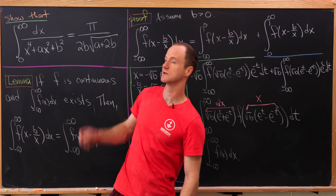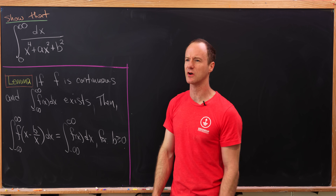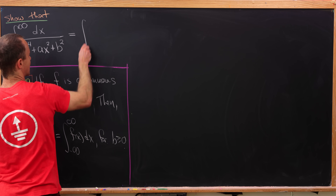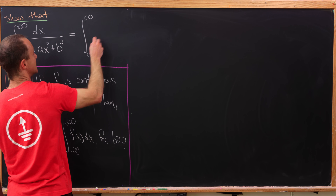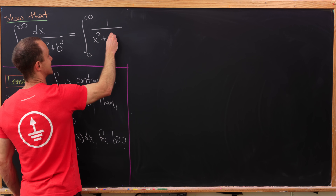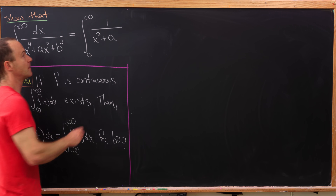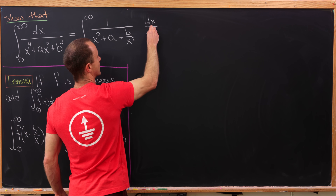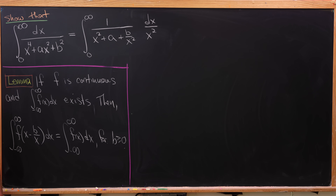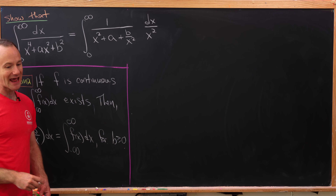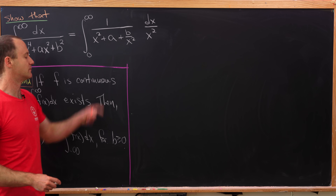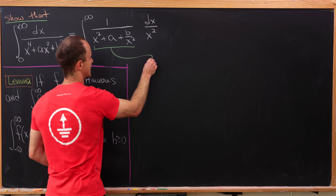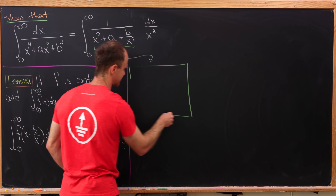Now let's focus on our main result. We've got this quartic in the denominator, but we'd like to turn it into a quadratic. We can do that by factoring an x squared out of the denominator. That leaves us with the integral from 0 to infinity of 1 over x squared plus a plus b over x squared, times dx over x squared.